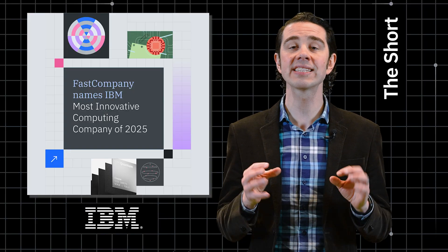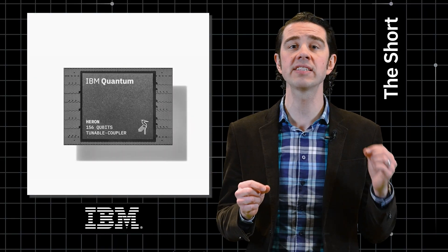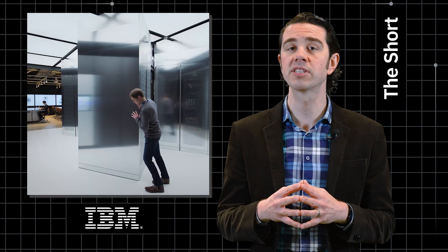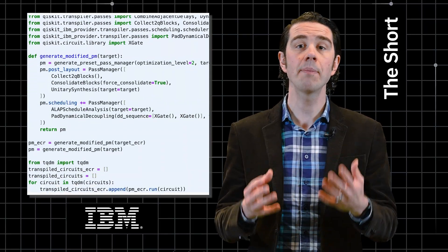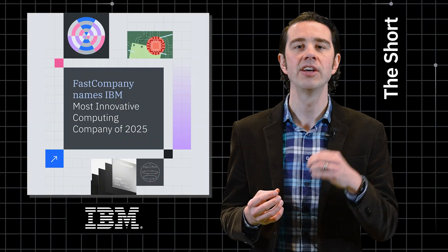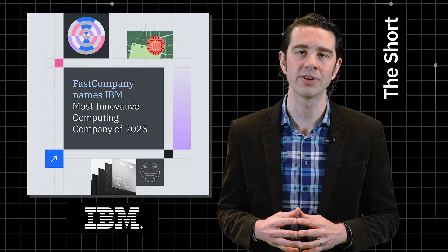They also highlighted our latest advancements, including the 156-qubit IBM Heron processor, modular IBM Quantum System 2 computer, the most popular quantum software out there, Qiskit, and other developments on our path to quantum advantage and fault tolerance.